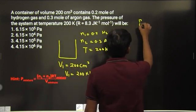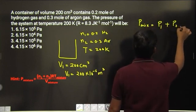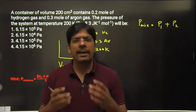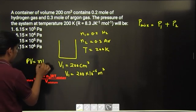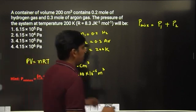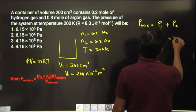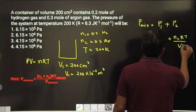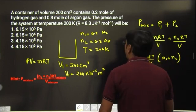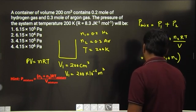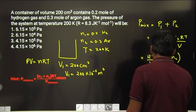According to Dalton's law of partial pressure, the pressure of mixture would be the individual pressure exerted by hydrogen gas plus pressure exerted by argon gas. Now you know that PV equals nRT, so the pressure would be nRT by volume. This is n1 RT by V plus n2 RT by V. We will take RT by V common, this is n1 plus n2. We have the value of R in SI system as 8.3, temperature as 200 kelvin, volume as 200 multiplied by 10 to the power minus 6. Definitely n1 plus n2 would come out to be 0.5.